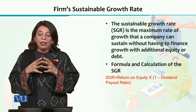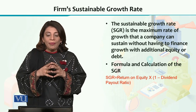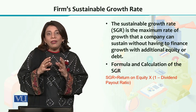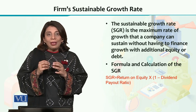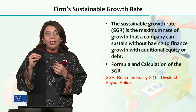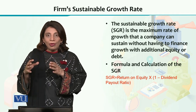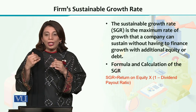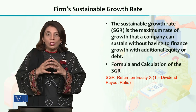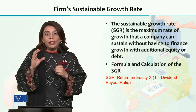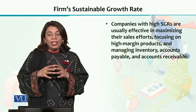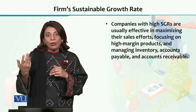For that, if we look at the formula of SGR — which we are talking about, the sustainable growth rate — that is basically return on equity. You multiply that by the dividend payout ratio, and that will give you the value of the firm's sustainable growth rate.